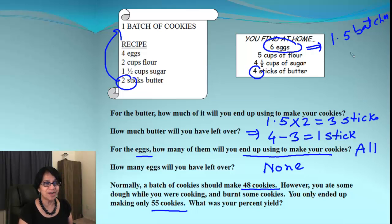Look at that. 1.5 batches is something we are supposed to make. Each batch contains 48 cookies. That's times 48. When we do that, we end up getting 72. So ideally, we should have got 72 cookies. How many we got? We only got 55.